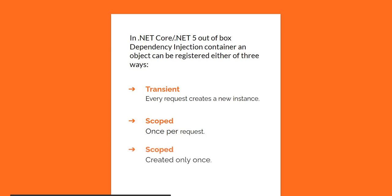The third way of creating an object is singleton. The singleton object will be created only once for the entire lifecycle of the application. Every subsequent request for the object from the dependency injection container will give the same instance — it doesn't matter how many times it is called during the application's lifetime, it will return the same object again and again. I'm going to show a demo to illustrate how it works.